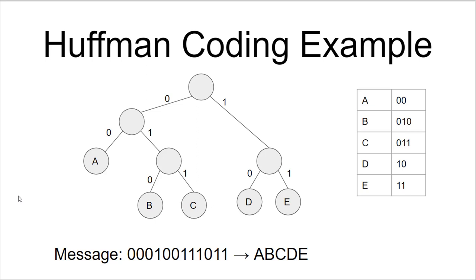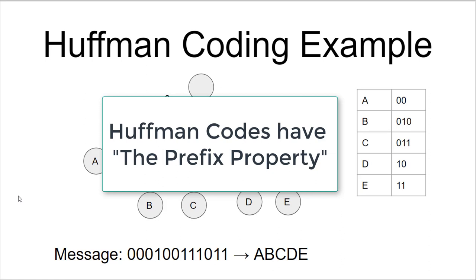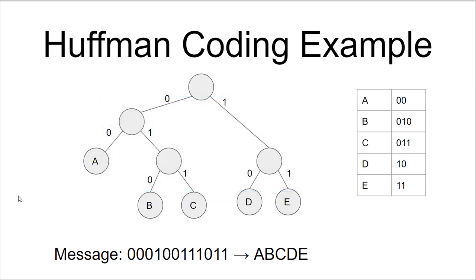When a coding technique does not have any prefixes in it like this, it is said to have the prefix property. This is a fundamental property of Huffman coding. This is one of the benefits you get automatically by using a Huffman code.